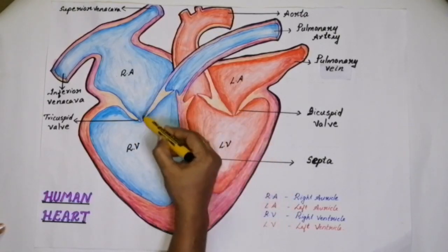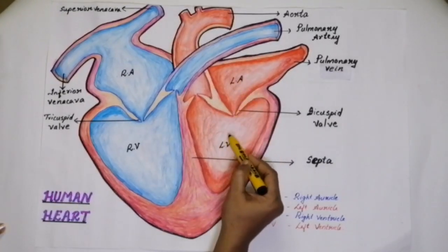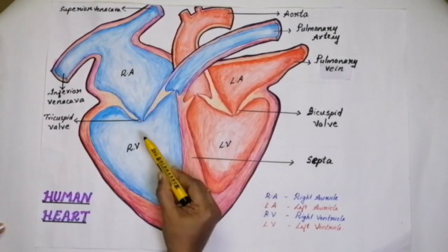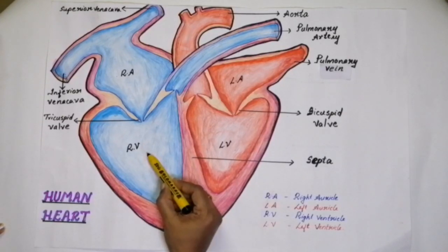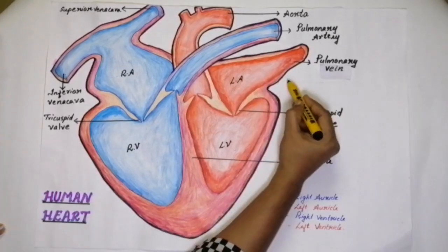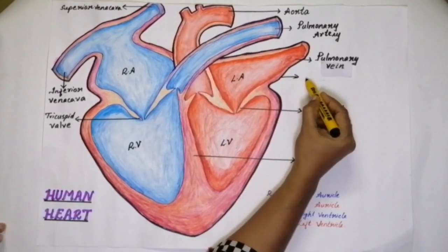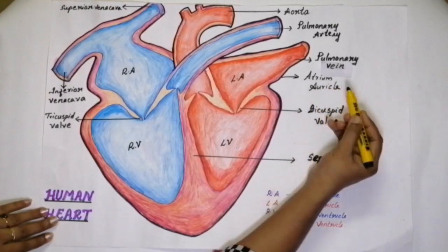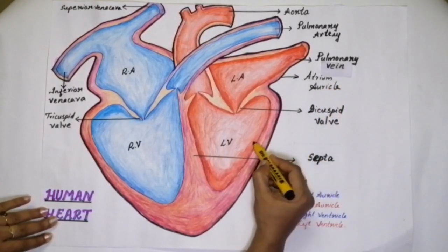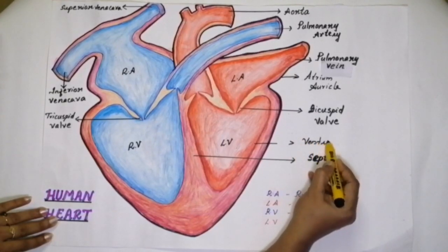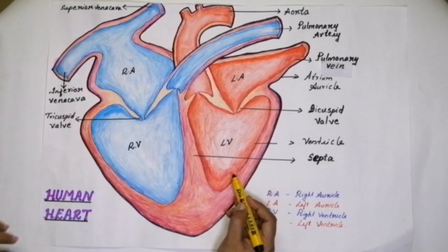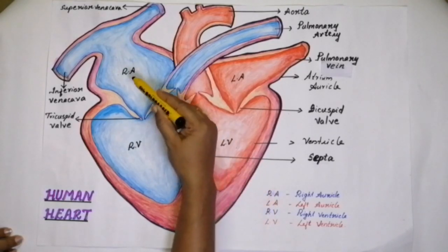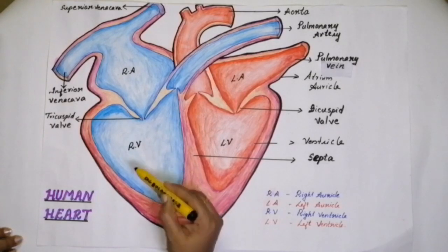Each half consists of two chambers. In the left side you can see an upper chamber and a lower chamber, and in the right side also you can see an upper and lower chamber. The upper chambers are called the atrium or auricle, and the lower chambers are called ventricles. So each half has an upper auricle and a lower ventricle — a left auricle and left ventricle, and a right auricle and right ventricle.